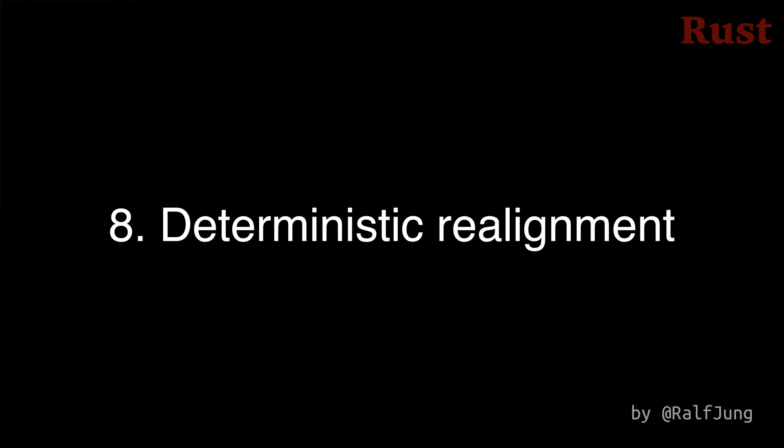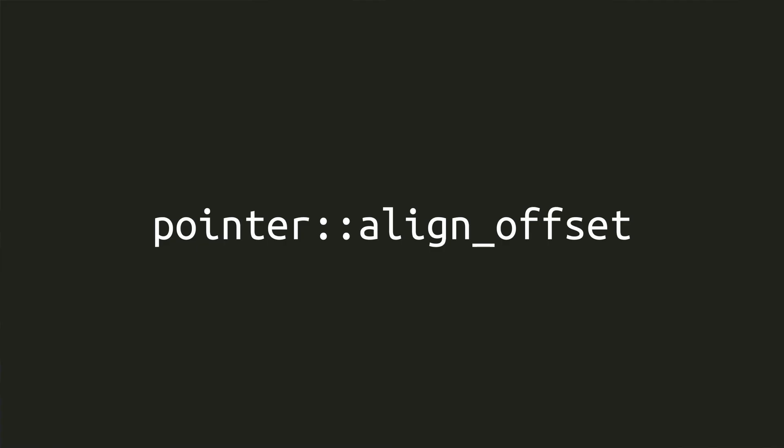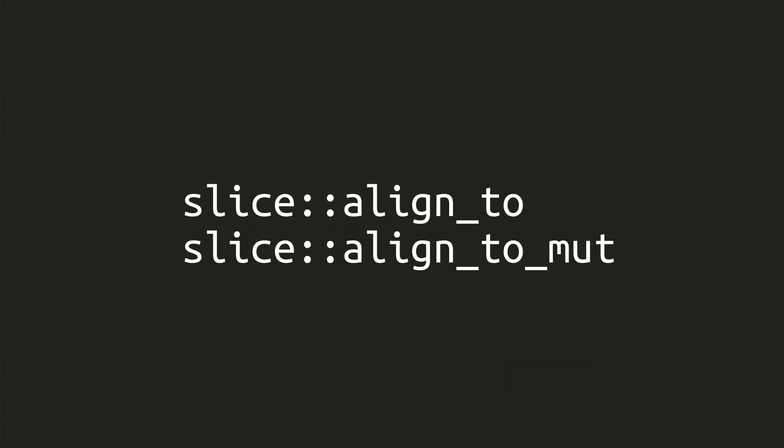Number 8: Some functions that change the alignment of pointers and slices had inconsistent behavior. Now pointer::align_offset only returns usize::MAX when it isn't possible to change the alignment as specified, and slice::align_to and slice::align_to_mut always return the largest possible aligned middle slice instead of just sometimes leaving it empty.